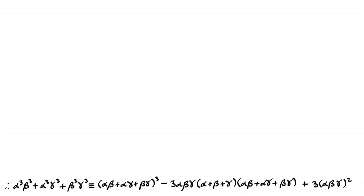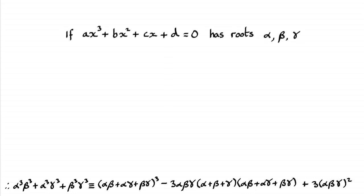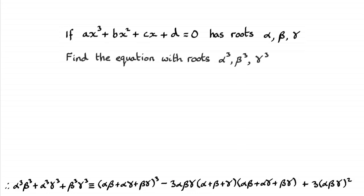Hi. What I've got here is another identity that you might need to use. If you're given a cubic polynomial with roots alpha, beta, gamma, and you're asked to work out a new cubic equation with roots alpha cubed, beta cubed and gamma cubed, then you're going to at one point need to use this identity here.